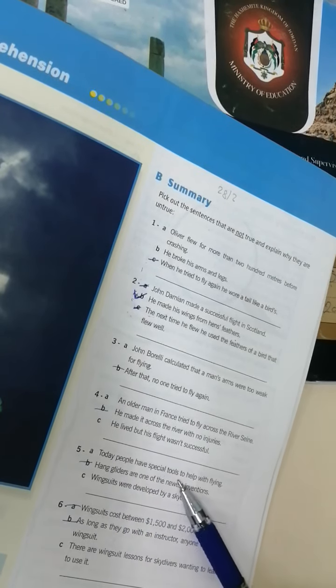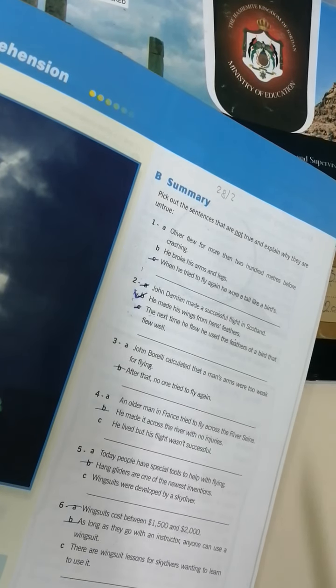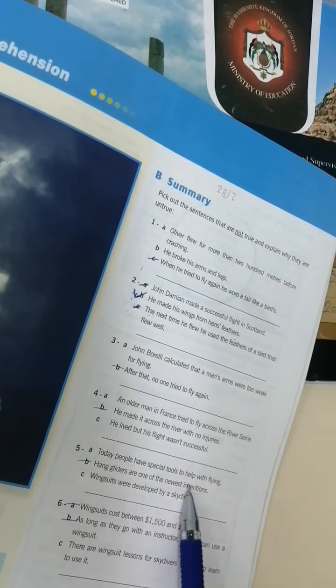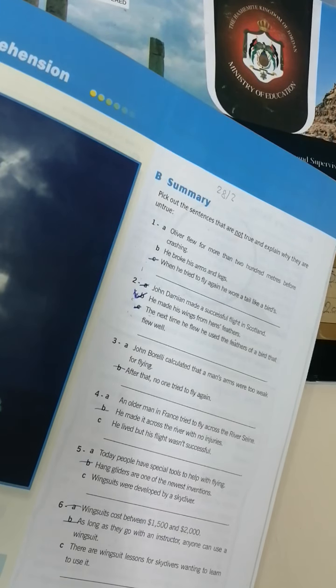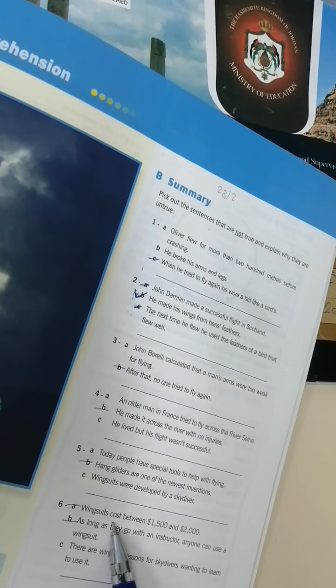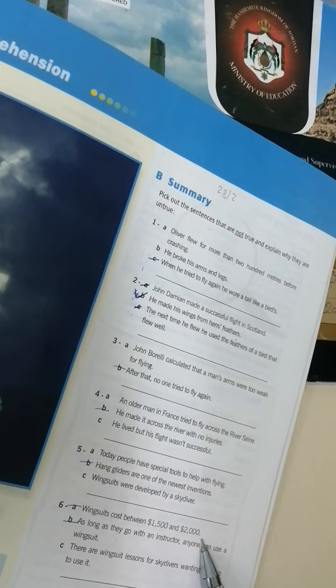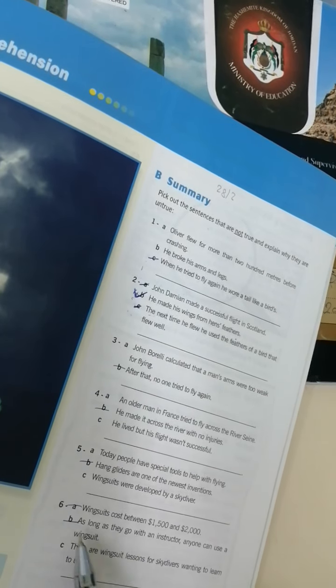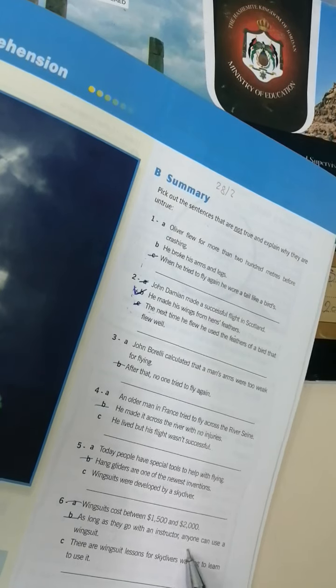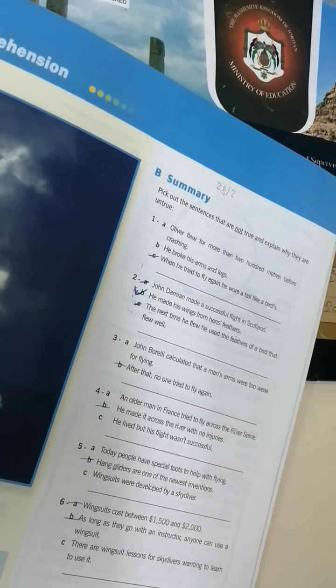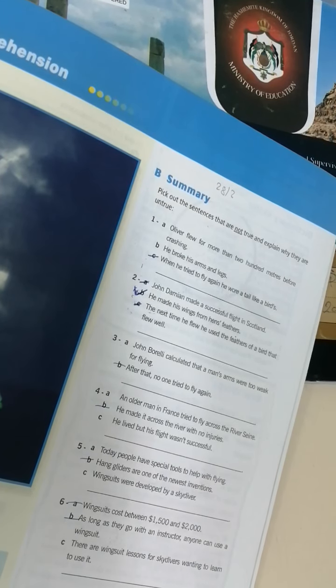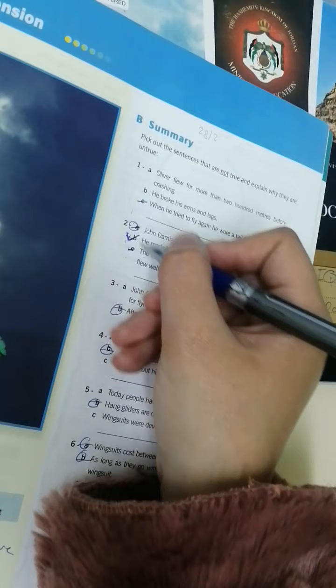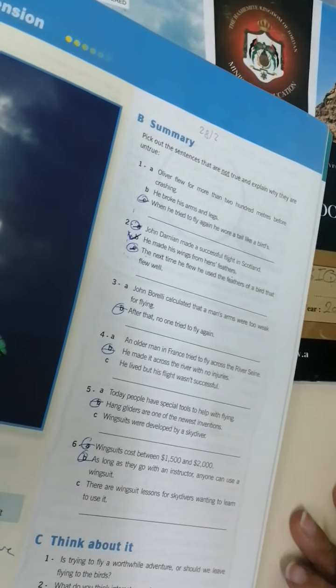Five: Today people have special tools to help with flying. Yes انو عندهم ادوات خاصة. Hang gliders are one of the newest inventions. هي اكتر واحدة جديدة لا معناته B هي الغلط. Six: Wingsuits cost between one thousand and fifty and two thousand. من الف وخمسمية لالفين غلط مش الالف وخمسمية لالفين لالفين وخمسمية. As long as they go with an instructor anyone can use wingsuit. اي واحد بقدر استخدمه الوينكسوت غلط. معناته المحطوط عليهم هدول هم اللي غلط.